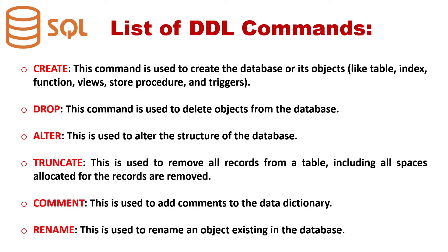List of DDL commands: Create — this command is used to create the database or its objects like table, index, function, views, stored procedure, and triggers. Drop — this command is used to delete objects from the database. Alter — this is used to alter the structure of the database. Truncate — this is used to remove all records from a table, including all spaces allocated for the records. Comment — this is used to add comments to the data dictionary. And Rename — this is used to rename an object existing in the database.